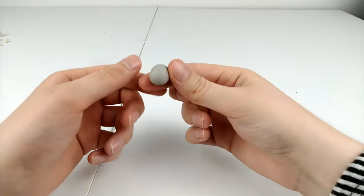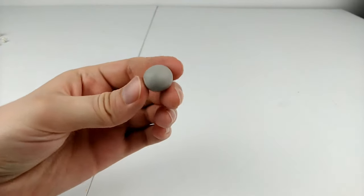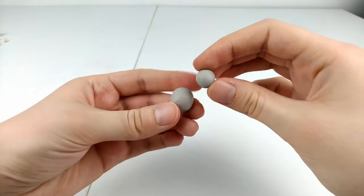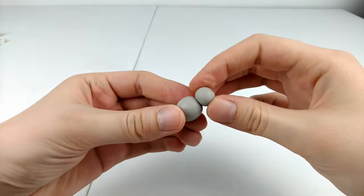First animal we'll be making is a little bunny rabbit. Let's start off with rolling a ball of grey clay, as well as a smaller ball that we'll use for the head.